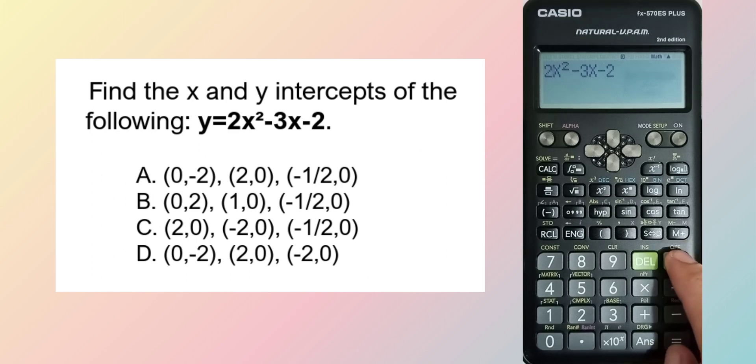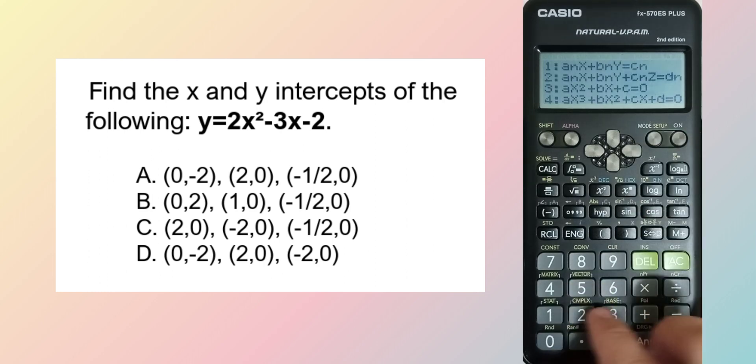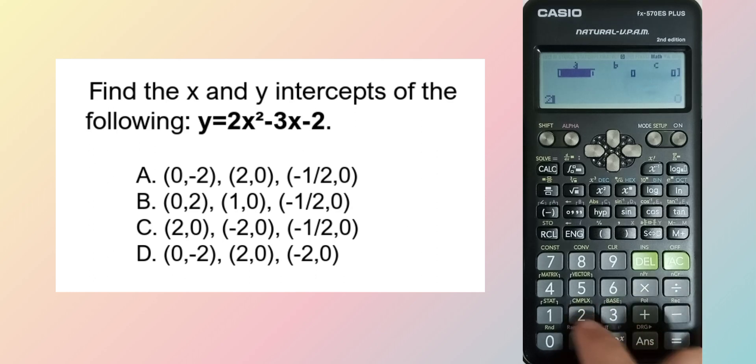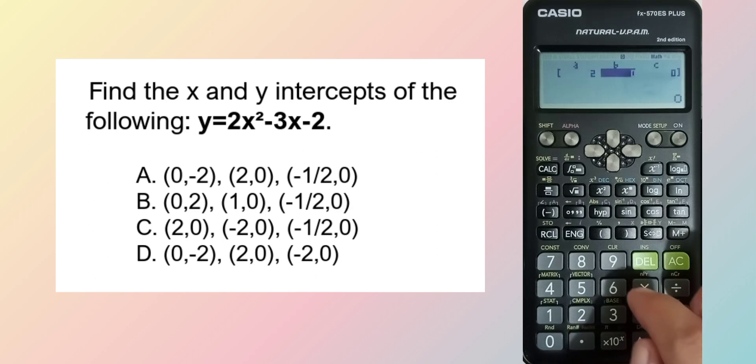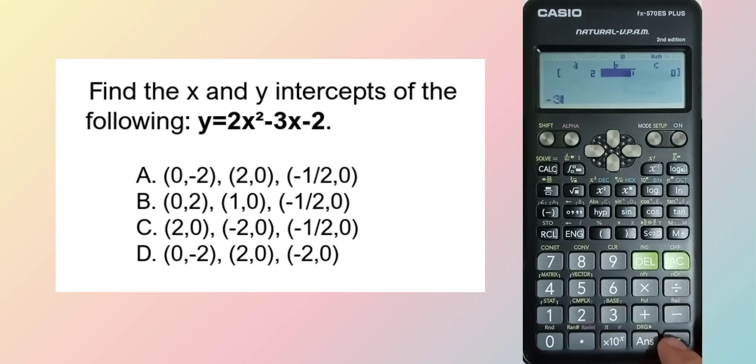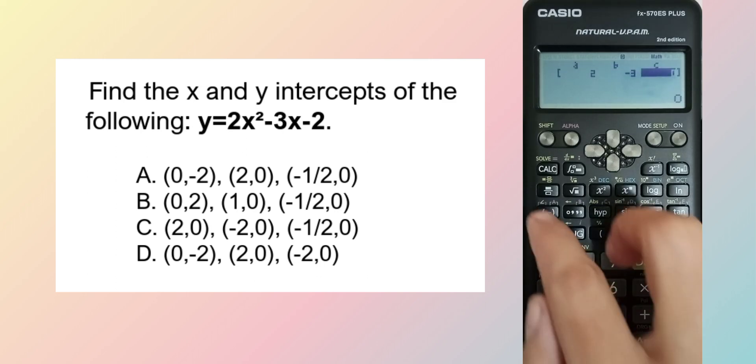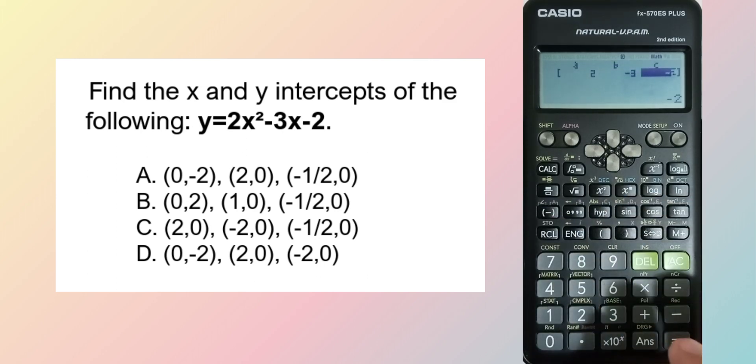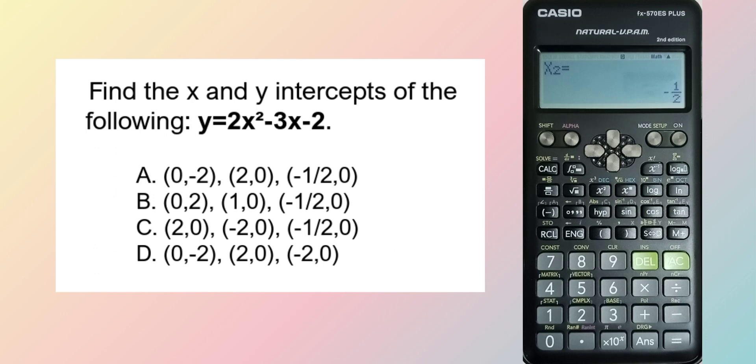Yes, it's a quadratic: 2x² - 3x - 2. Using the quadratic mode, the coefficient of x² is 2, then -3, then -2. So x = 2 and x = -1/2.